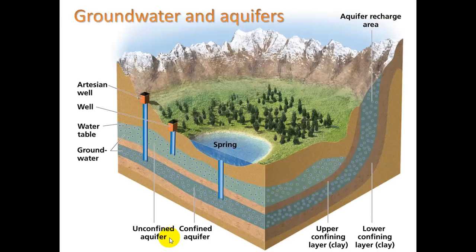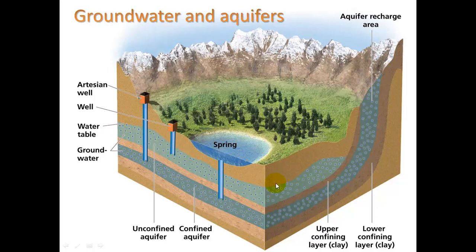Let's talk about groundwater. This diagram from your book shows two aquifers. One is called a confined aquifer because it's sandwiched between two layers of clay, and as we know from the soil lab, water doesn't go through clay so easily, so that water can become pressurized. If you drill a well, the water could gush up on its own spontaneously — you wouldn't need a pump. We can also see springs that naturally come out of the ground, and the water table, which is the upper level of the water that's in the ground.